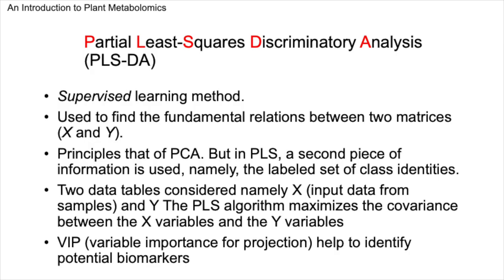PLSDA is a variant of PLS regression — a supervised learning method used for classification problems. In PLSDA, the response matrix Y is categorical. This technique melds principles from PCA and regression to identify the directions or components that most effectively differentiate between classes. PLSDA seeks to maximize the covariance between the predictor variables in matrix X and the categorical responses in matrix Y, focusing on variations most predictive of class distinctions. Variable importance for projection, or VIP, scores are a key feature of PLSDA, highlighting variables that most significantly contribute to the model in terms of predictive power and explained variance, thus assisting in biomarker identification.